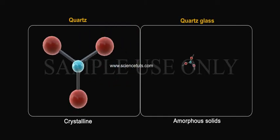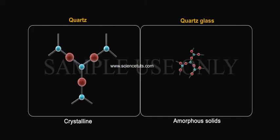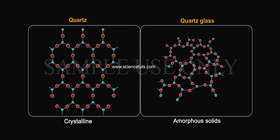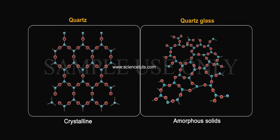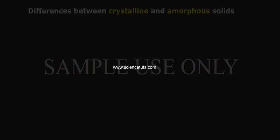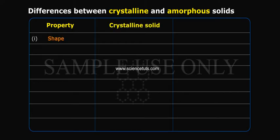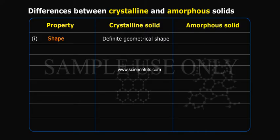Differences between crystalline and amorphous solids. Property 1: Shape. Crystalline solid has a definite geometrical shape. Amorphous solid has an irregular shape.